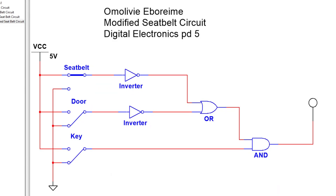Next, when the door is open, the key is in the ignition, and the seatbelt is not buckled, the buzzer will go off. Next, when the door is open and the seatbelt is buckled and the key is in the ignition.